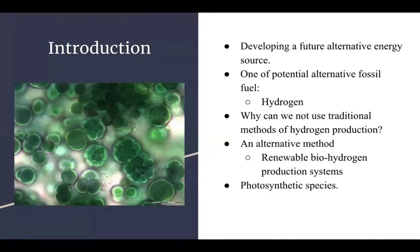Renewable biohydrogen production systems can be carbon neutral and less energy intensive. Photosynthetic species can use sunlight to produce molecular hydrogen in the most positive way. Our goal was to explore the photosynthetic potential of cyanobacteria as a source of energy for bioproduction of hydrogen.